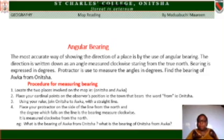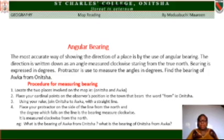Let us find the bearing of Oka from Onitsha. Procedure: one, locate the two places — Oka and Onitsha. Two, place your cardinal points at the observer's position, which is Onitsha. Use your ruler to join Oka to Onitsha with a straight line. Place your protractor on the side of the line from the north, and the degree which falls on the line is the bearing, measured clockwise from the north.